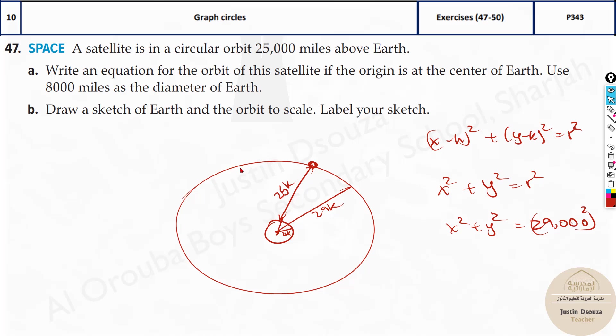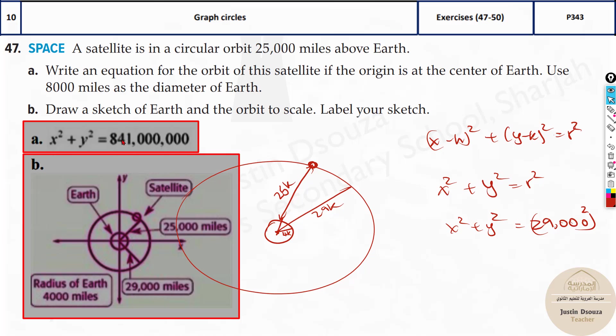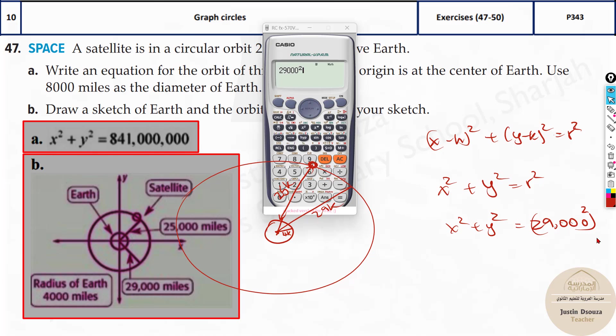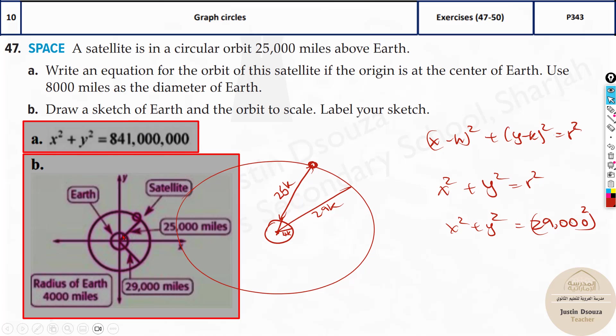And let's see the sample answers. Here, this 841 million is by squaring 29,000. I've just typed in 29,000 squared. That is 841 million. Yes, it's the same answer. And this is the graph. In the coordinate, just draw two circles. This is the satellite. This is the earth. And the radius is 29,000.